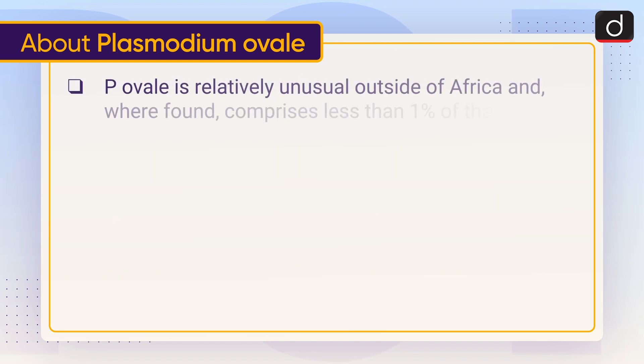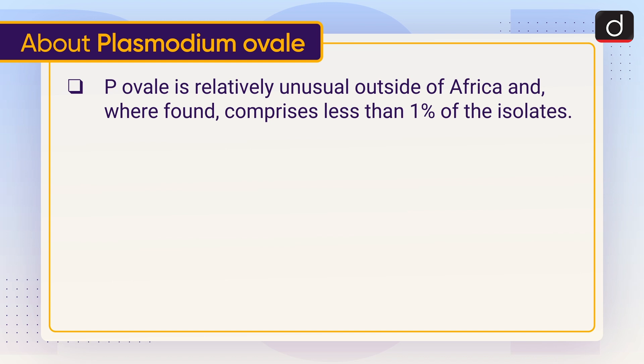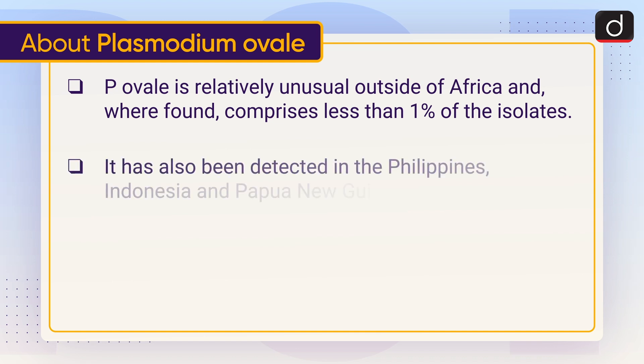P. ovale malaria is endemic to tropical western Africa. It is relatively unusual outside of Africa and where found comprises less than 1% of the isolates. It has also been detected in the Philippines, Indonesia, and Papua New Guinea.